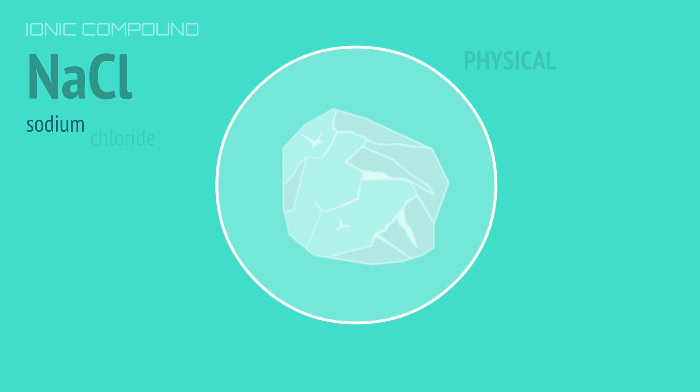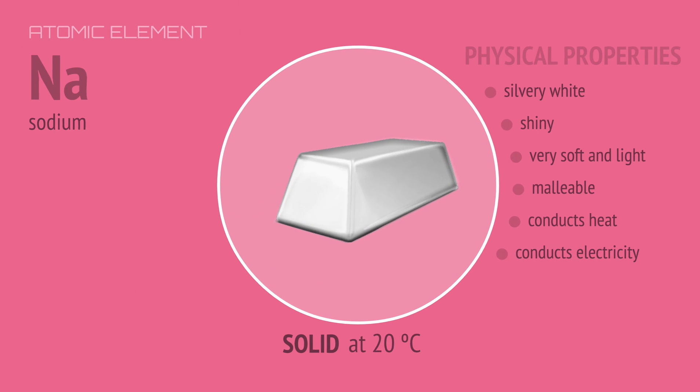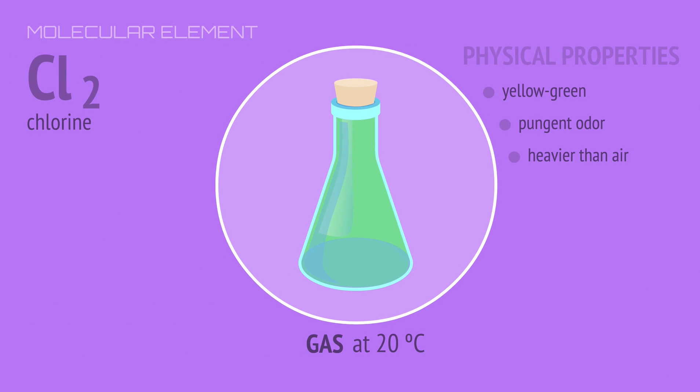The properties of a compound are often very different to those of the elements that make them up. Sodium chloride, or table salt, is a clear, brittle solid that's soluble in water. But the element sodium is a shiny grey metal, while the element chlorine is a pungent green gas.